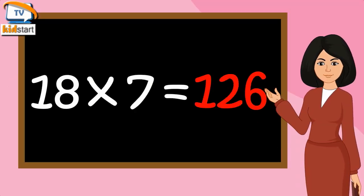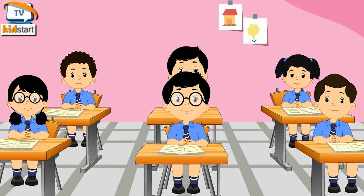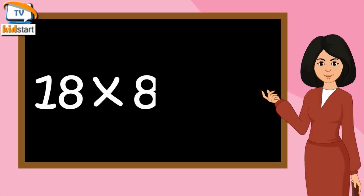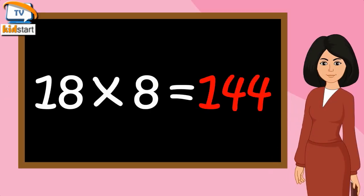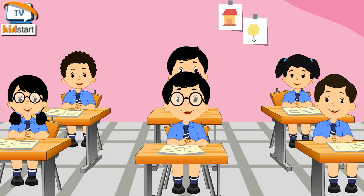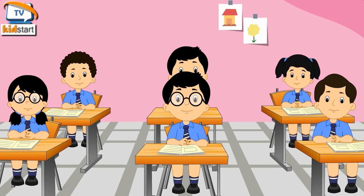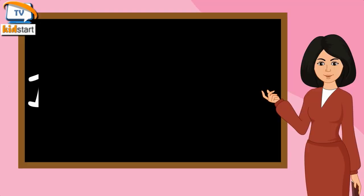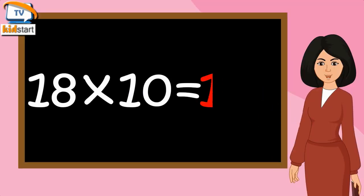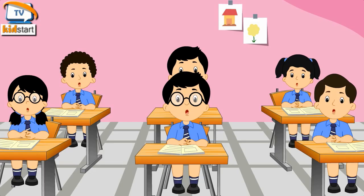Eighteen Sevens are 126. Eighteen Eights are 144. Eighteen Nines are 162. Eighteen Tens are 180.